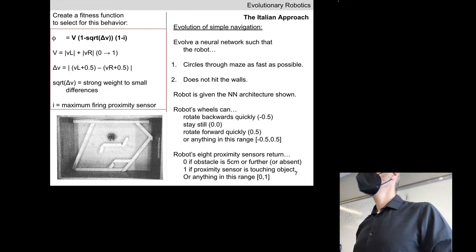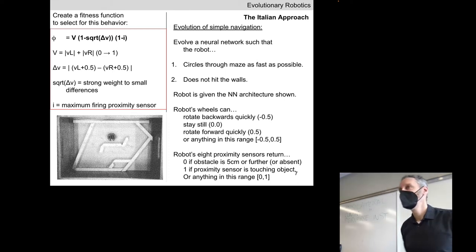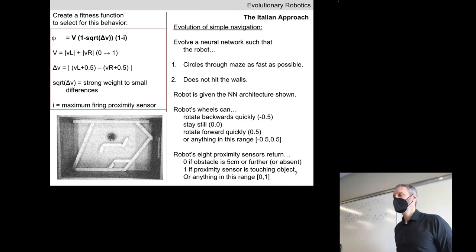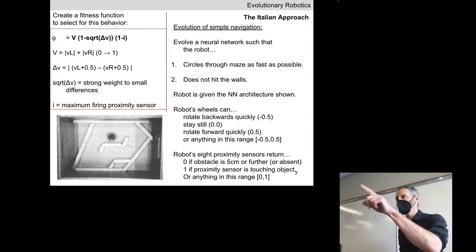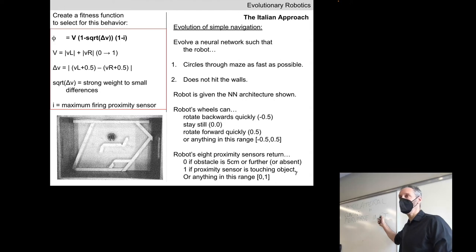The Boeing 737 MAX is another great example. They had a sensor that, whenever it sensed the aircraft was stalling, would put the nose down. This happened right after departure because the sensor thought it was stalling when it wasn't — and instead of letting the aircraft continue climbing, it pushed the nose down and crashed. From the point of view of the flight software, it was convinced it was doing the right thing: 'You told me when I sense these particular sensor values to take this action.' It's very difficult to solve this problem — maybe we will, maybe we won't.